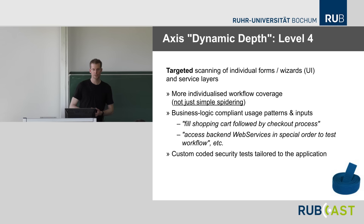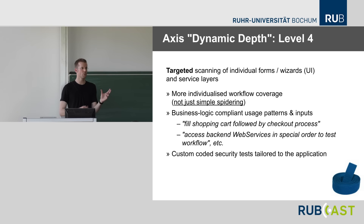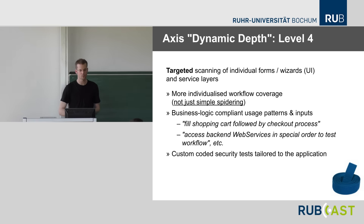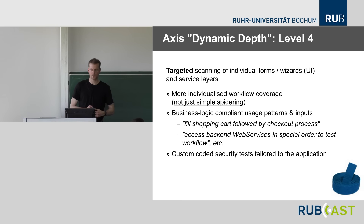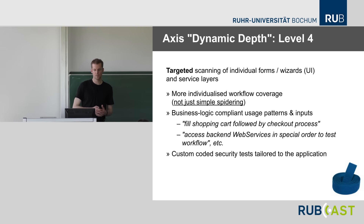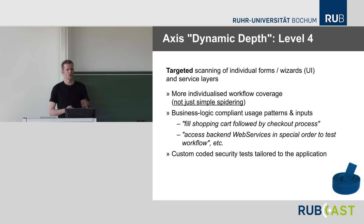Level 4, the blue belt of dynamic depth, is targeted scanning of individual forms — not just spidering. For example, in a shop you need to fill the shopping cart, provide checkout information, and then scan the shipping address page. Or access backend web services in a special order to test a workflow. Most of the time a spider won't execute the natural flow a user would. So at this level we need targeted scanning of individual forms and individual wizards in the user interface.